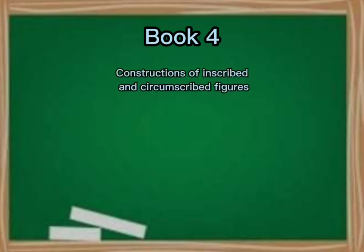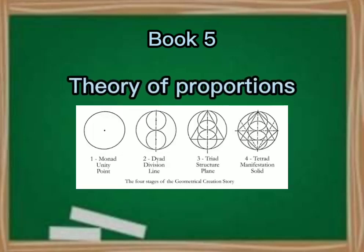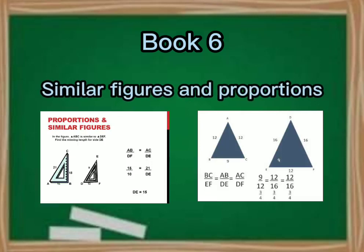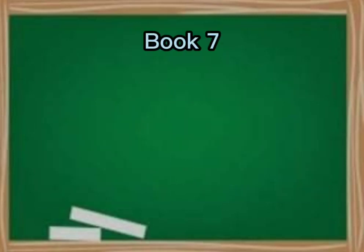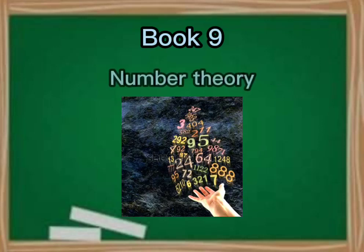Book 4, constructions for inscribed and circumscribed figures. Book 5, theory of proportions. Book 6, similar figures and proportions. Book 7, fundamentals of number theory. Book 8, continued proportion in number theory. Book 9, number theory.